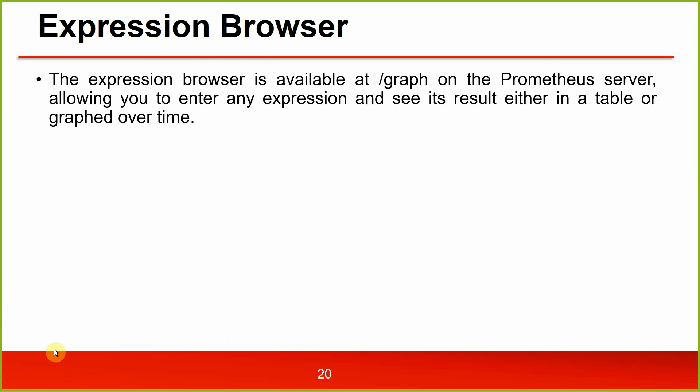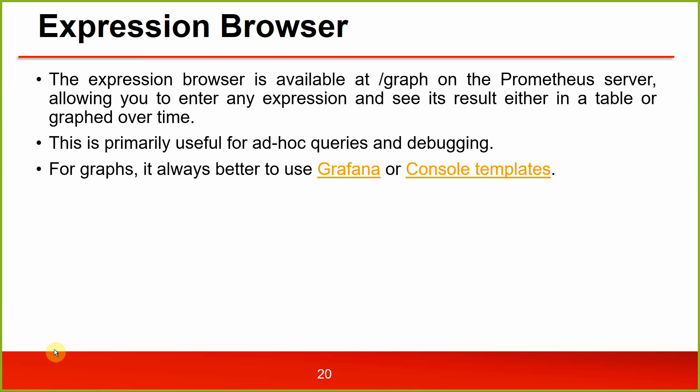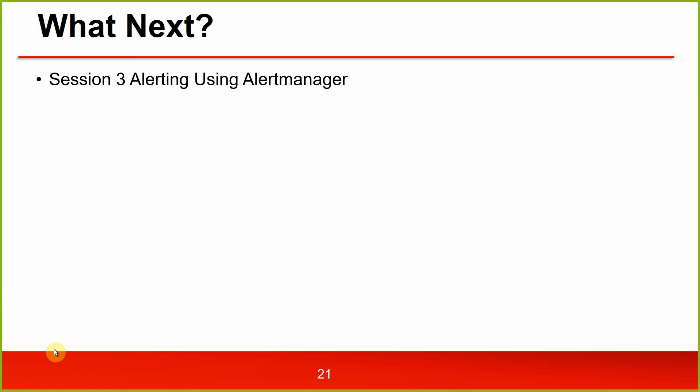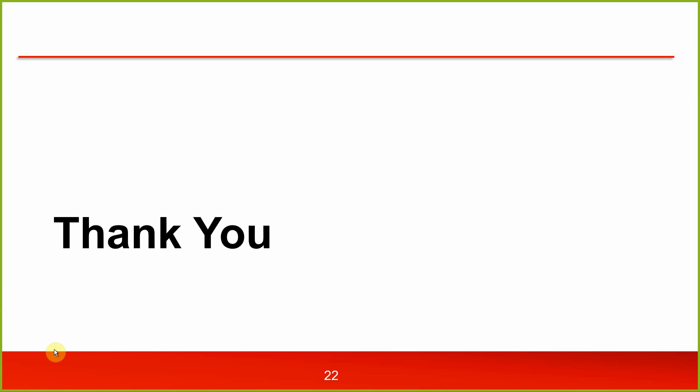The expression browser is available at /graph on your Prometheus server, allowing you to enter any expression and see results in a table or graphed over time — primarily useful for ad hoc queries and debugging. For graphing, it is always better to use Grafana or console templates. Coming up next: alerting using alert managers. Self-study links are provided for client libraries, service discovery documentation, and node exporters. That's all for this session — thank you.